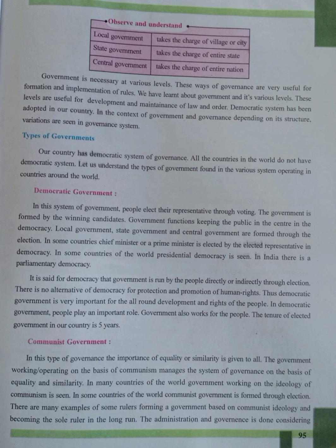In a democratic government, people elect their representatives through voting. The government is formed by the winning candidates, keeping the public at the center. Local government, state government, and central government are formed through elections. In some countries, a chief minister or prime minister is elected by the elected representatives. In some countries, presidential democracy is seen; in India, there is parliamentary democracy. It is said that government is run by the people directly or indirectly through election. There is no alternative to democracy for the protection and promotion of human rights.